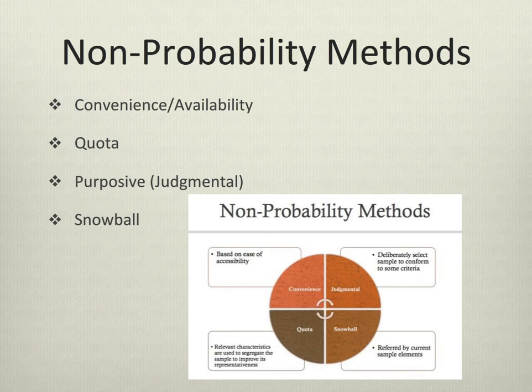In this lecture, I'm going to cover four non-probability methods: convenience, also called availability sampling; quota sampling; purposive, also called judgmental sampling; and snowball sampling.